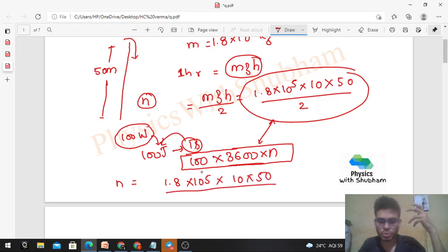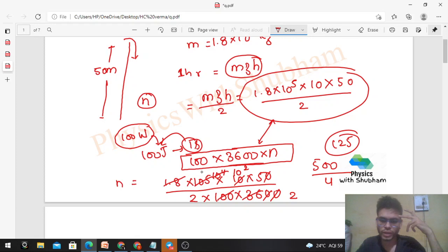So check how much it becomes. Look, 2 and 500 divided by 4, so 125, right? So n is equal to 125. Fine.